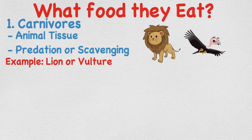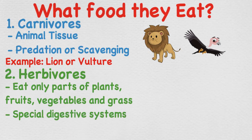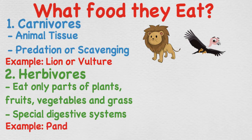Herbivores are animals or insects that get their energy from eating plants and only plants. They can eat parts of plants, fruits and vegetables produced by fruit-bearing plants. These animals have special digestive systems that allow them to digest all kinds of plants, including grass. An example of a herbivore is a panda — their diet consists of only bamboo.